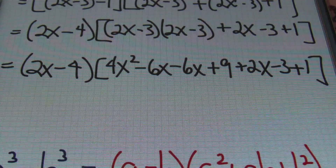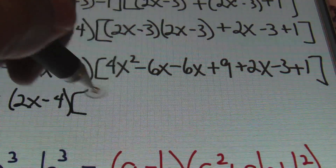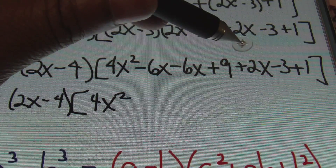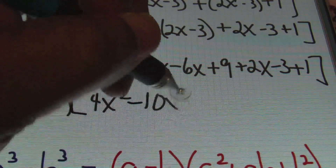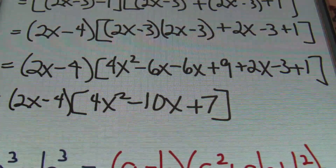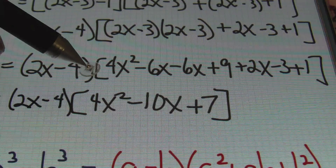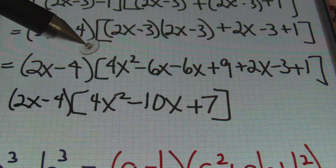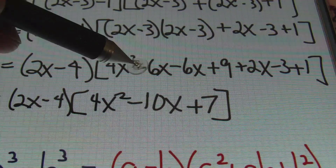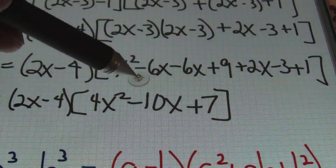Combining like terms within the brackets: bringing down 2x minus 4 — since negative 3 minus 1 is negative 4 — times 4x squared. Combining the x-terms: negative 6x, negative 6x, and positive 2x gives me negative 10x. Combining constants: 9 minus 3 plus 1 gives me 7. So we have 2x minus 4 times 4x squared minus 10x plus 7. Checking if that trinomial factors: there aren't two values that multiply to give a master product of 28 and also add to 10, so it won't factor.